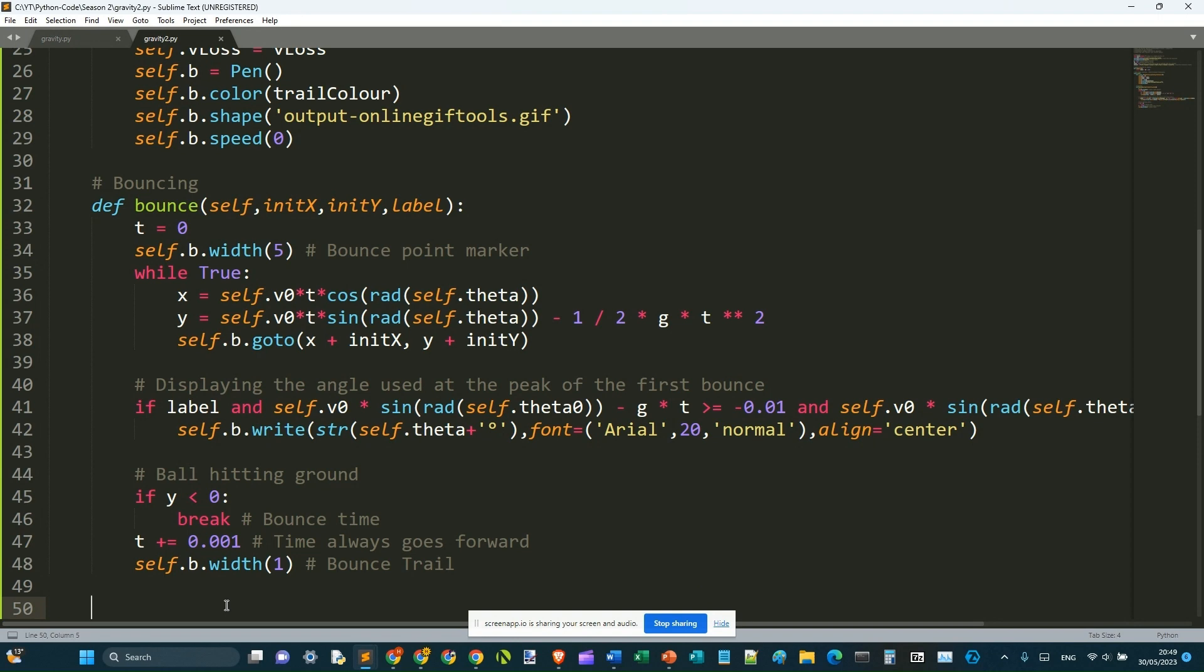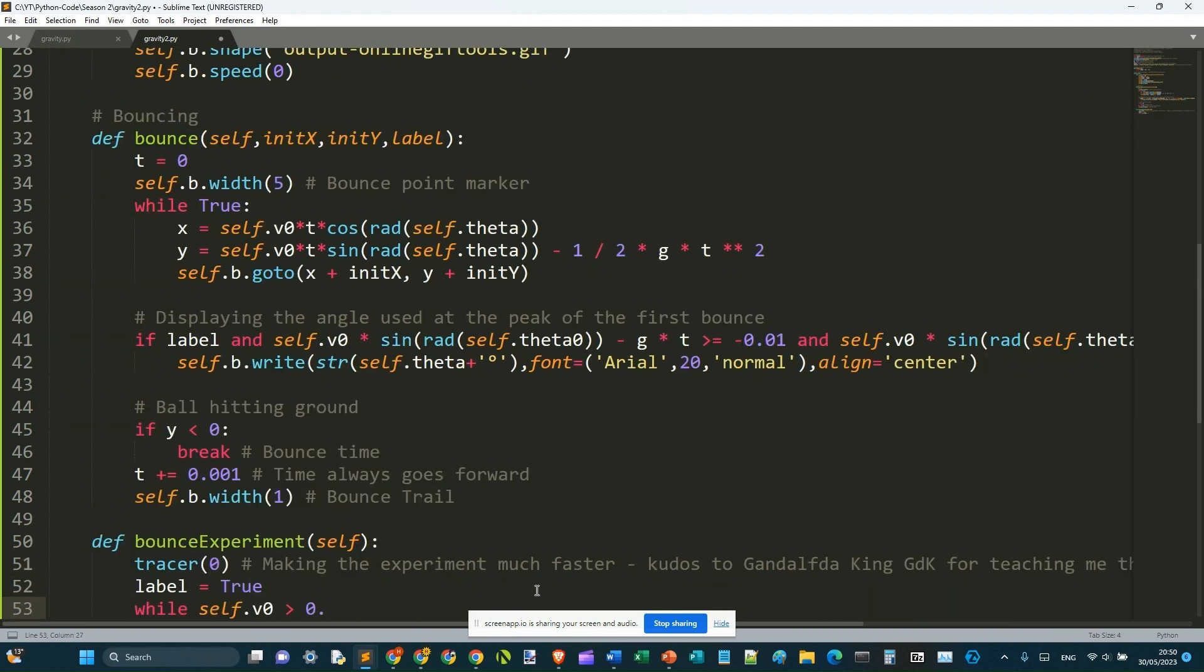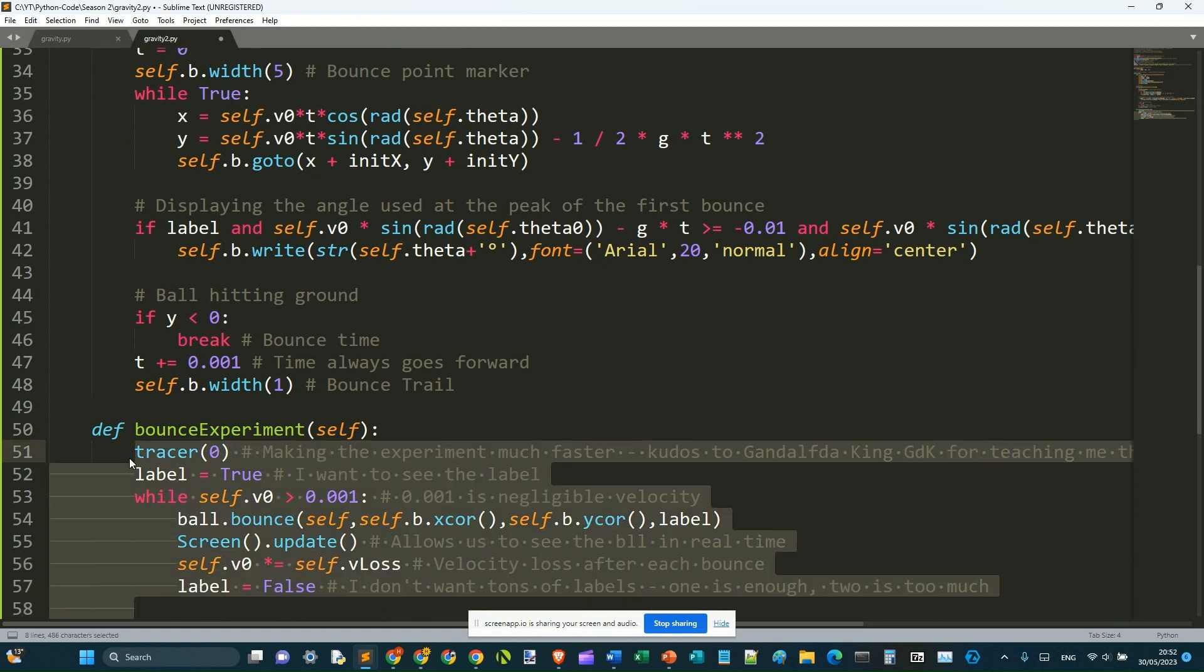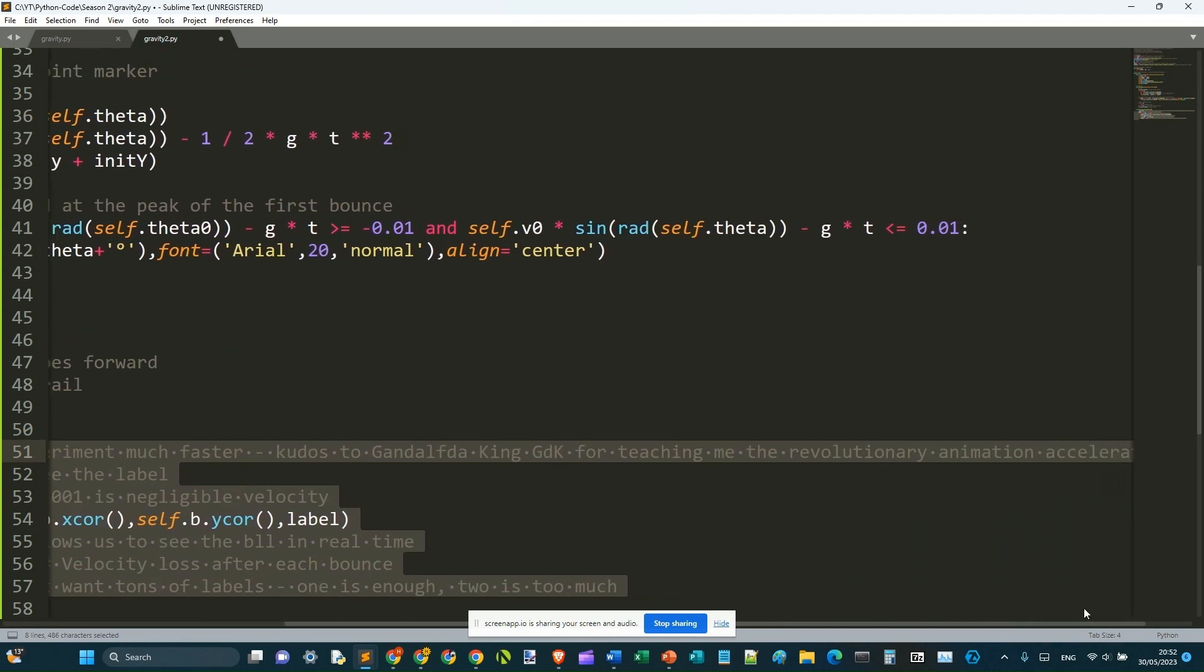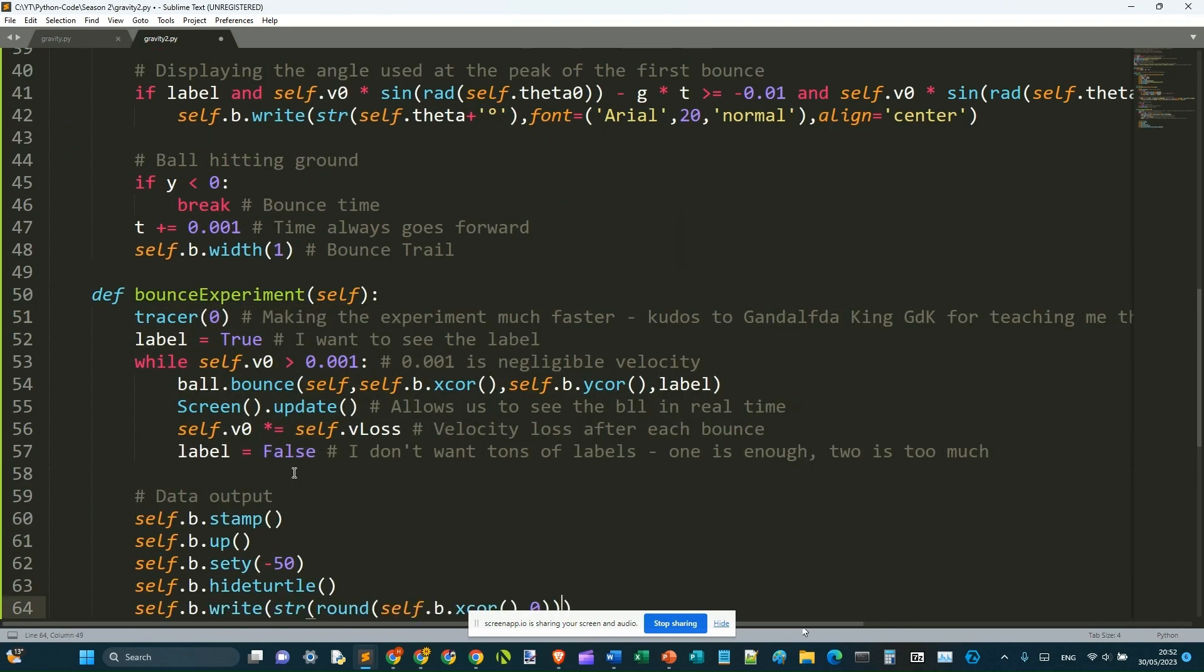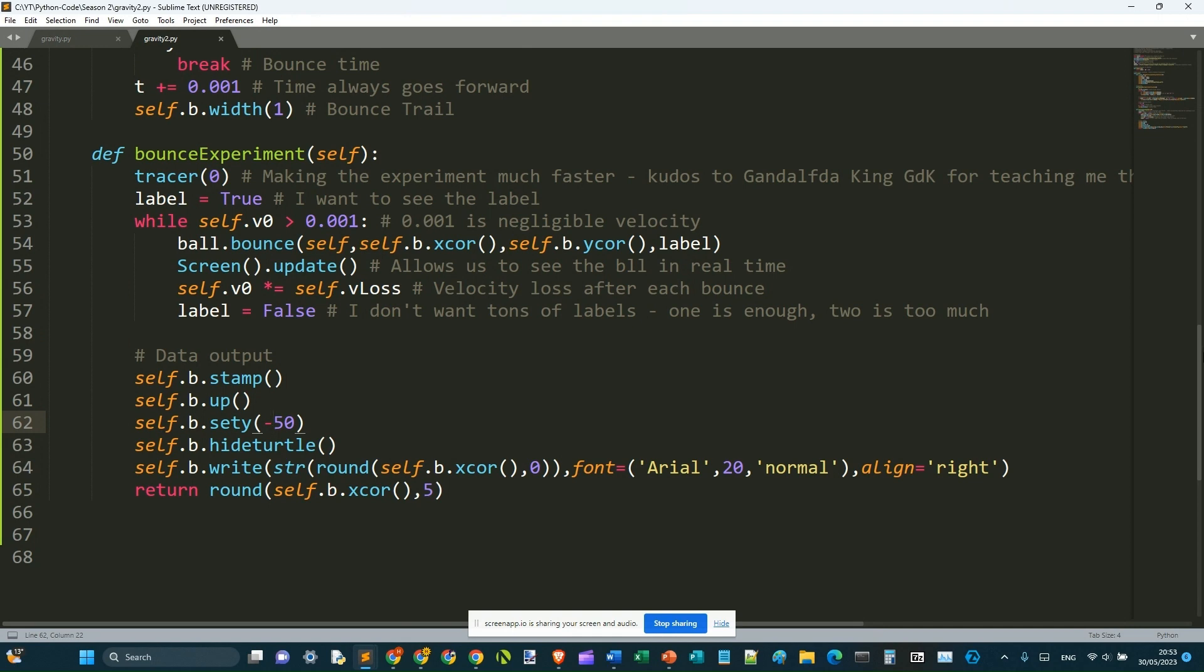Now, we're going to do the bounce experiments. I'm going to give you time to digest all this information. Here, for the data output, the commands speak for themselves. But wait. Here, self.b.set_y_coordinate minus 50. Does that go to affect the code? Because then it will just shift the bounce to that coordinate.